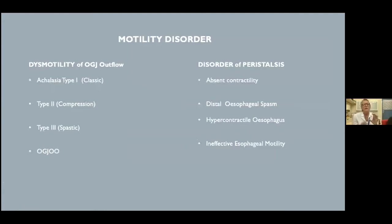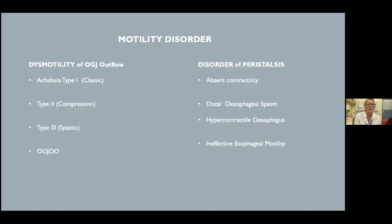According to these metrics, version four divides motility disorders into two groups. IRP is the most important metric: increased IRP implies EGJ outflow obstruction, grouping achalasia type one, two, and three together with EGJ outflow obstruction. The second group — those without increased IRP — covers disorders of peristalsis: absent contractility, distal esophageal spasm, hypercontractile esophagus, and ineffective esophageal motility.